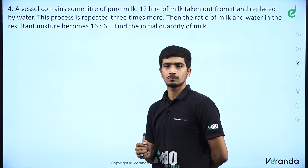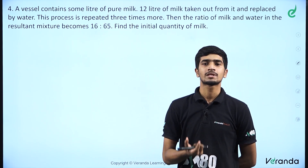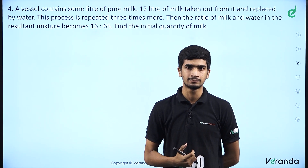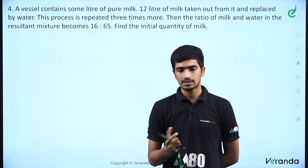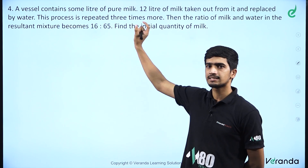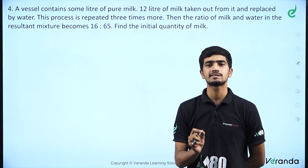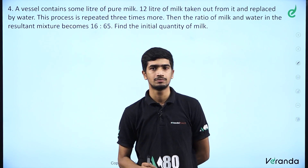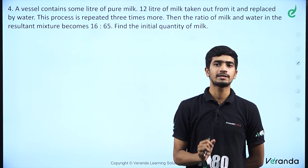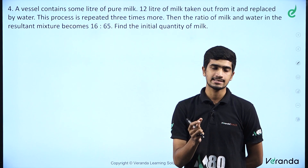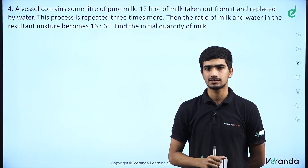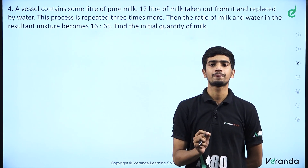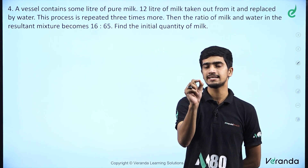Next question: a vessel contains some liters of pure milk. 12 liters of milk is taken out and replaced by water. This process is repeated 3 more times, so n equals 4. Finally, the ratio of milk to water is 16 to 65. Find the initial quantity.